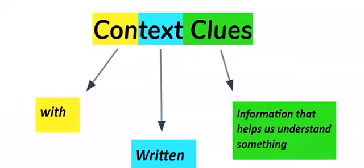We all know what the meaning of clues is: information that helps us understand something. So what's the meaning of context? Con is a prefix that means with. Text means written words.